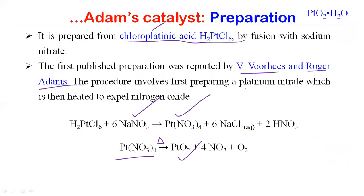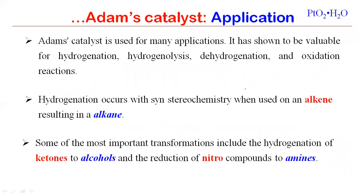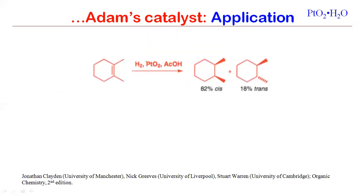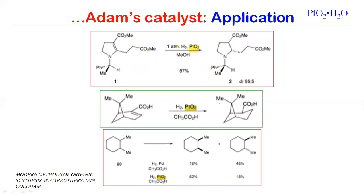The most common application of Adam's catalyst: using this platinum catalyst we get almost 82 percent of the cis-alkene, because addition of hydrogen takes place in the cis fashion so both substituent alkyl groups end up on the same face. These examples can be found in William Carothers' book. For example, an alkene treated with Adam's catalyst gives the cis product with nearly 95:5 selectivity.